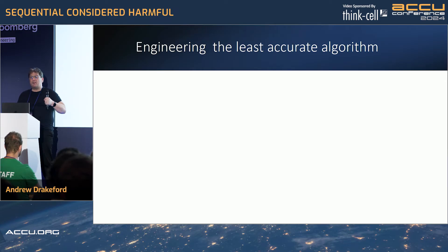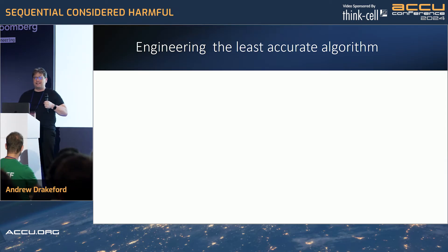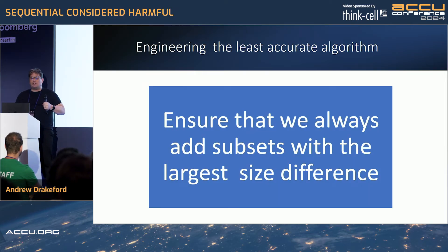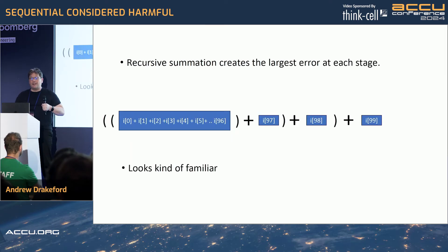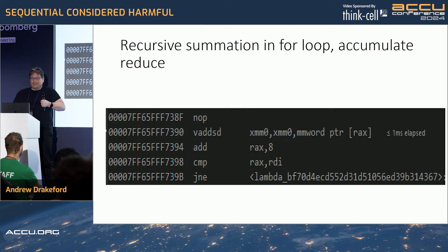Now let's use this heuristic to engineer the least accurate algorithm we can — and it's been done. What we need to do is ensure that we always add subsets with the largest size difference possible. So if we had 100 elements, we'd add one element to the sum of 98, and repeat that over and over, keeping it really inaccurate all the way along. This looks familiar — because this is exactly what we've just seen. Optimally inaccurate.